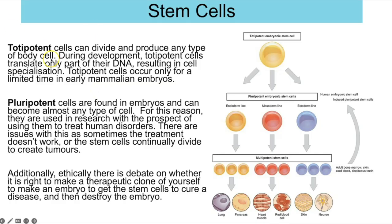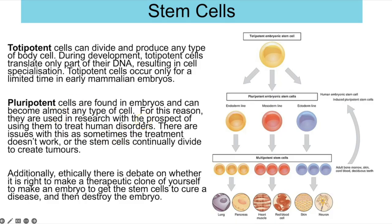Totipotent stem cells can divide and produce any type of cell in the body. During development totipotent cells translate only part of the DNA, resulting in cell specialisation. Totipotent cells occur only for a limited time in early mammalian embryos. Pluripotent cells are also found in embryos and can become almost any type of cell — they just can't become the placenta. For this reason pluripotent cells are used for research with the prospect of treating human diseases.